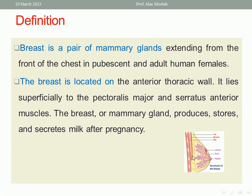The breast is superficial to the pectoralis major muscle and the serratus anterior muscle. The function of the breast is to produce, store, and secrete milk after pregnancy. So the breast is a pair of mammary glands extending from the front of the chest in adult human females.